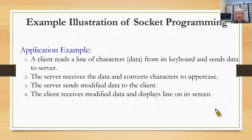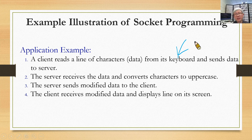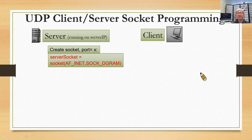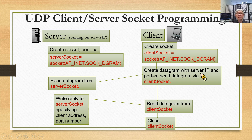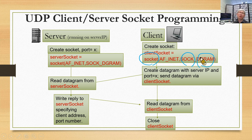Let us look at an example to illustrate socket programming. The problem is simple: the client keys in a message and sends it to the server. The server changes the case to uppercase and sends it back to the client. If we use UDP, we create a socket using SOCK_DGRAM to specify UDP, which also indicates IPv4. This is how we distinguish UDP socket programming from other types.